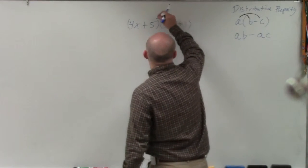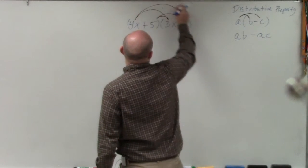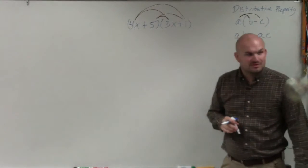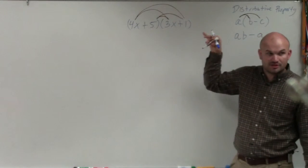However, the rules of distributive property still come out. You still multiply 5 times both these terms. You still multiply 4x times both these terms.